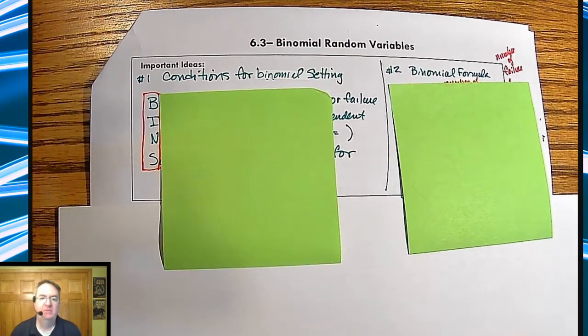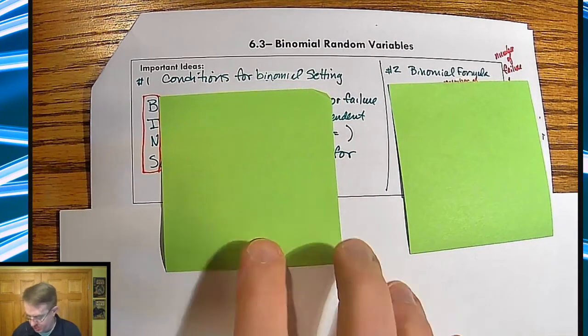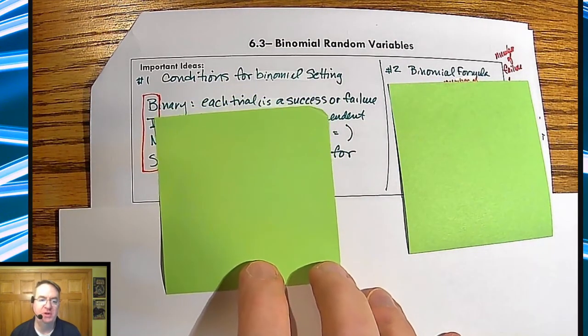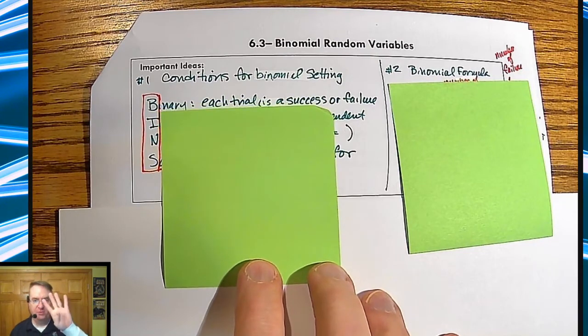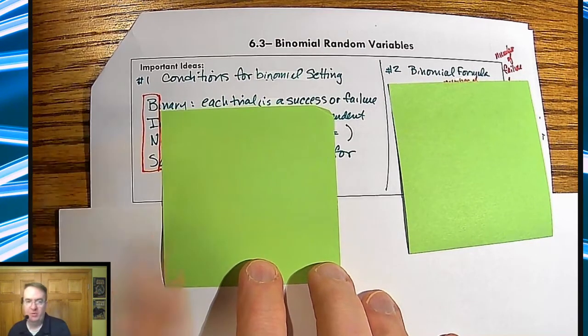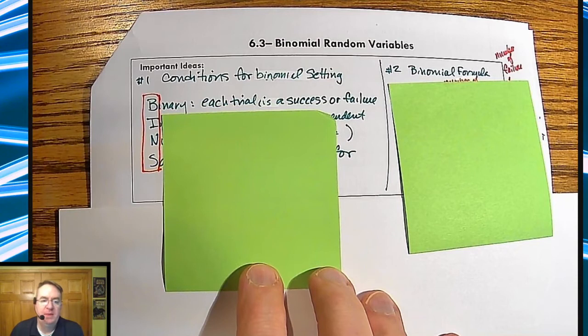The conditions for a binomial setting. By the phrase binomial, you should be expecting something to be about two, and that's true. It spells out the four conditions that you need to spell out the word BINS. The first one stands for binary.